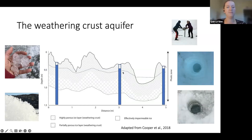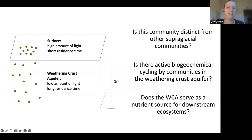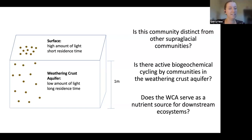Working from the idea that there's interesting microbiology and geochemistry in the weathering crust, we drilled boreholes — one to 1.5 meters deep — over the past two summers. As soon as the holes were empty, they filled with water, which we sampled. Compared to the ice surface, which has high light and short water residence times, the weathering crust has much longer residence times and only about 10% of surface light at one meter depth.